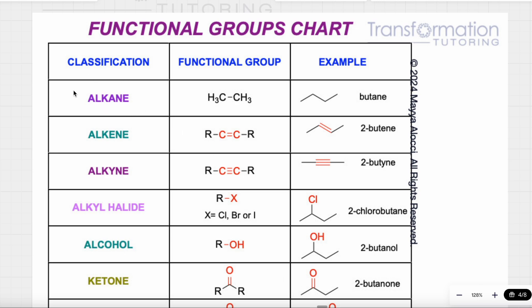First, we will talk about alkanes. An alkane is a hydrocarbon molecule — it consists of hydrogens and carbons — and the defining factor is that it has only single bonds between the carbon atoms. For example, here I have four carbons all bonded through single bonds, and the name is butane. 'But' means four, and '-ane' means it's an alkane.